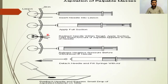We do not have to insert the needle at any fixed side or angle. We release the negative pressure before withdrawal of the needle. As we have to remove the needle, we release the negative pressure first. After that, we change the needle, and the rest of the material we place on the slide.